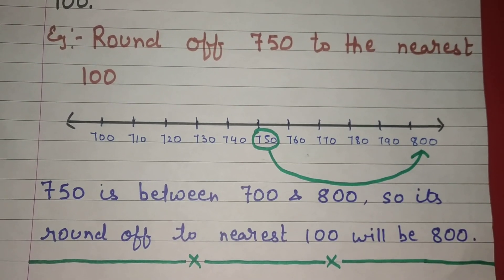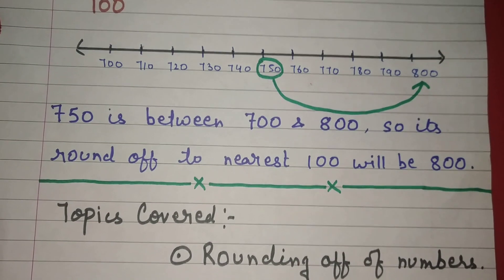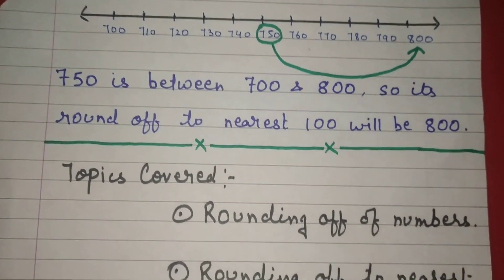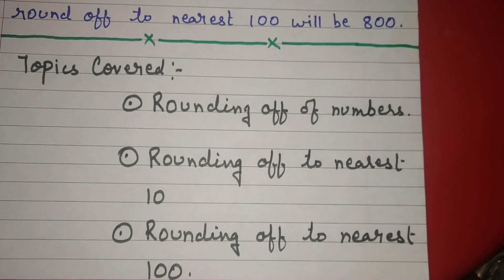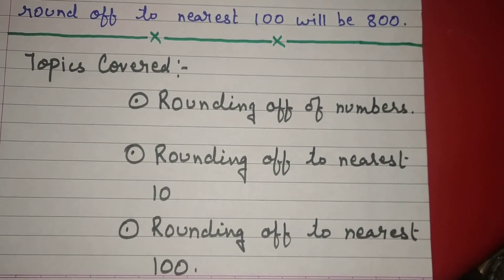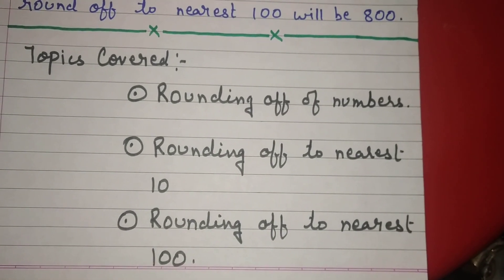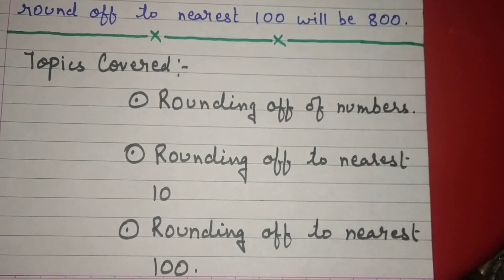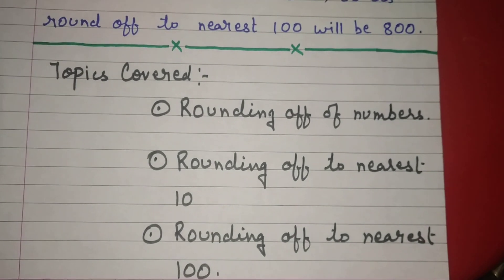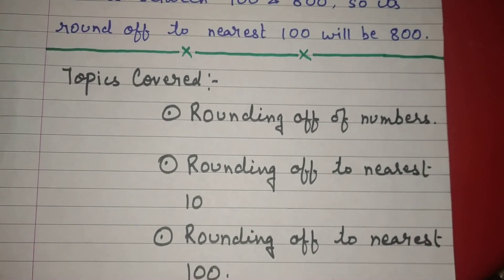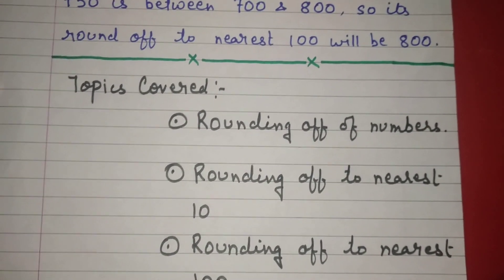That's all for today. Students, the topics we have learned today are: rounding off of numbers, rounding off to nearest 10, and rounding off to nearest 100. Thank you and have a nice day.